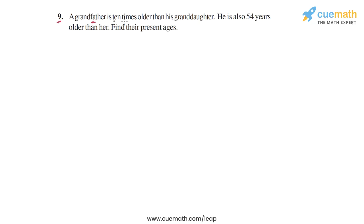Question 9 says a grandfather is 10 times older than his granddaughter. He is also 54 years older than her. Find their present ages. We are given the grandfather's age as a multiple of the granddaughter's age, and we're also told that the difference in their ages is 54 years.